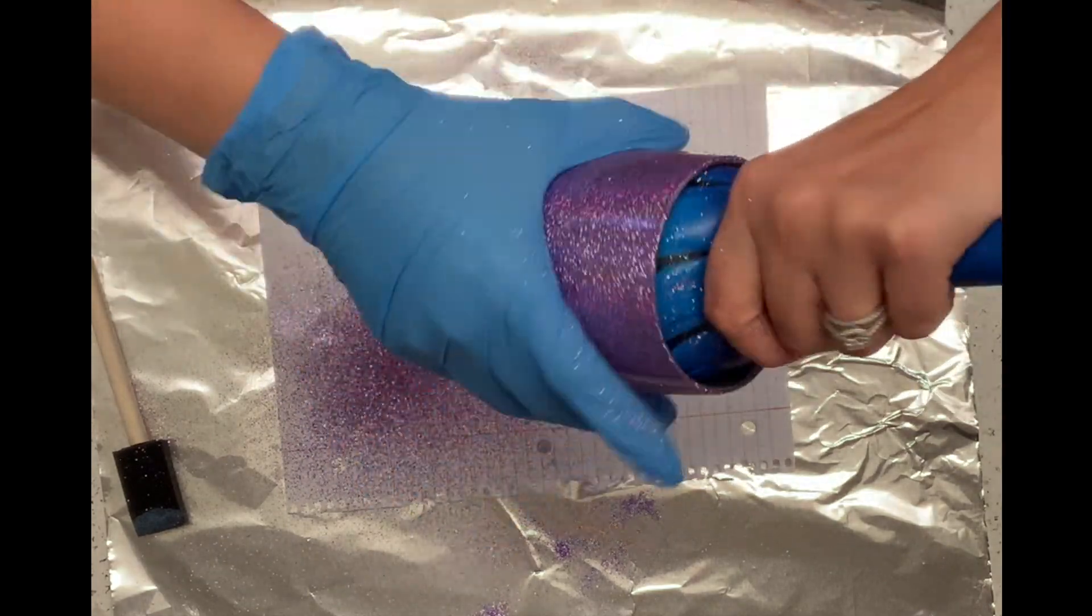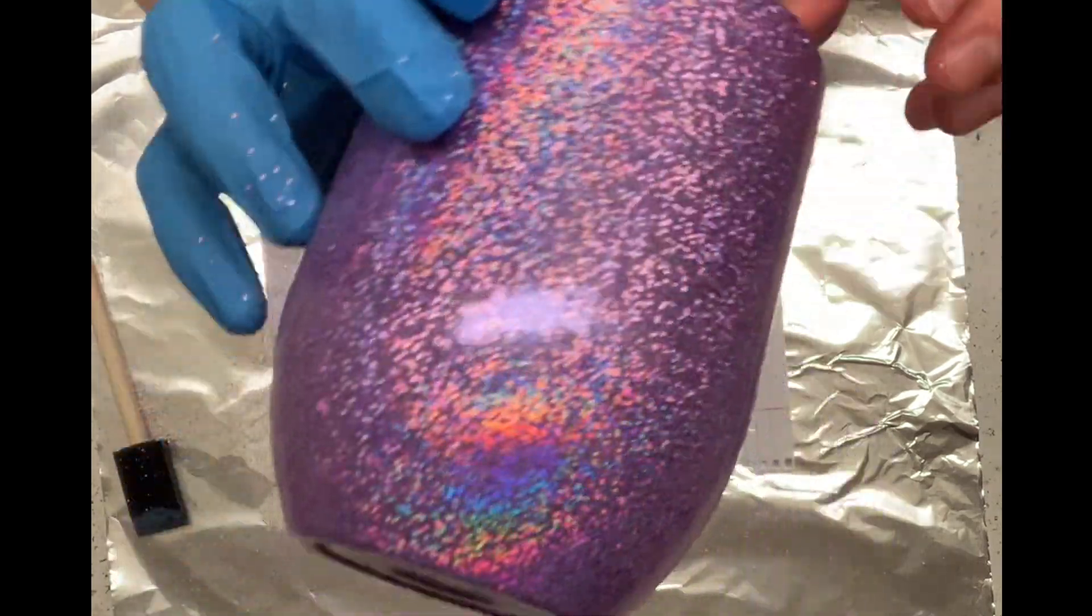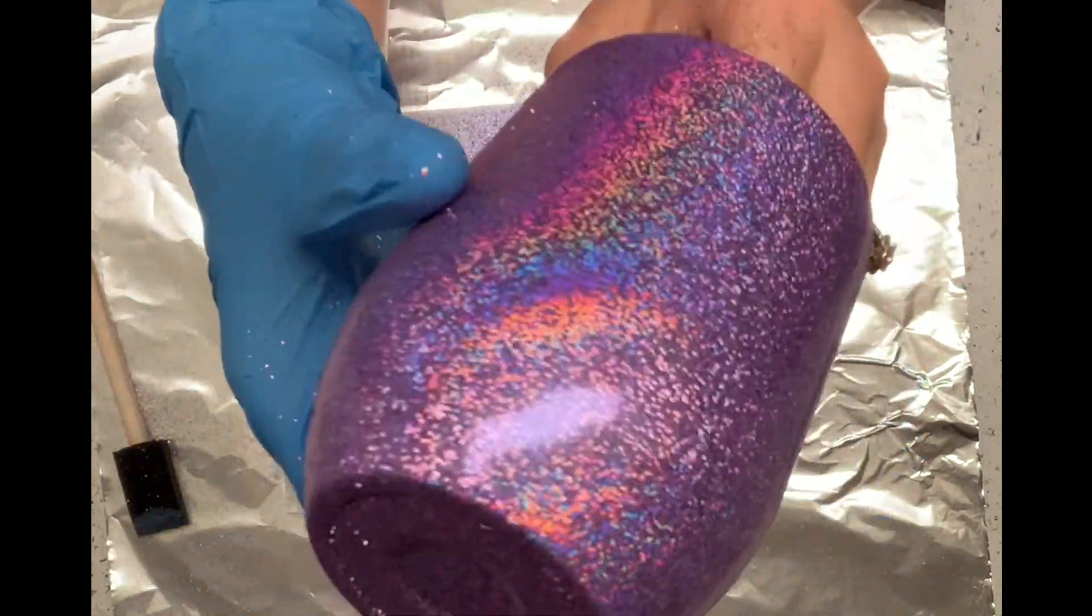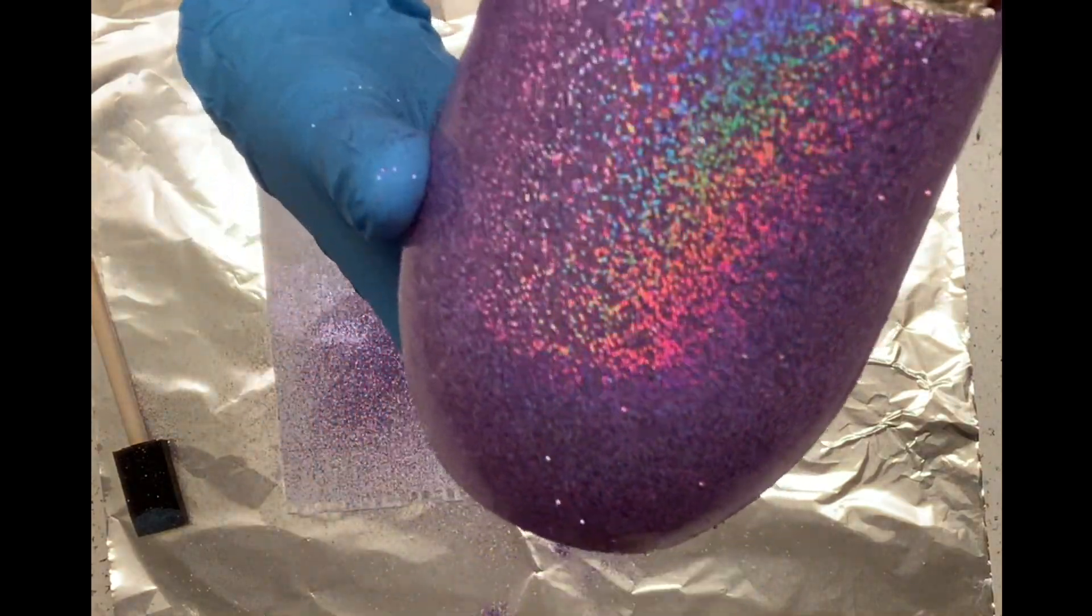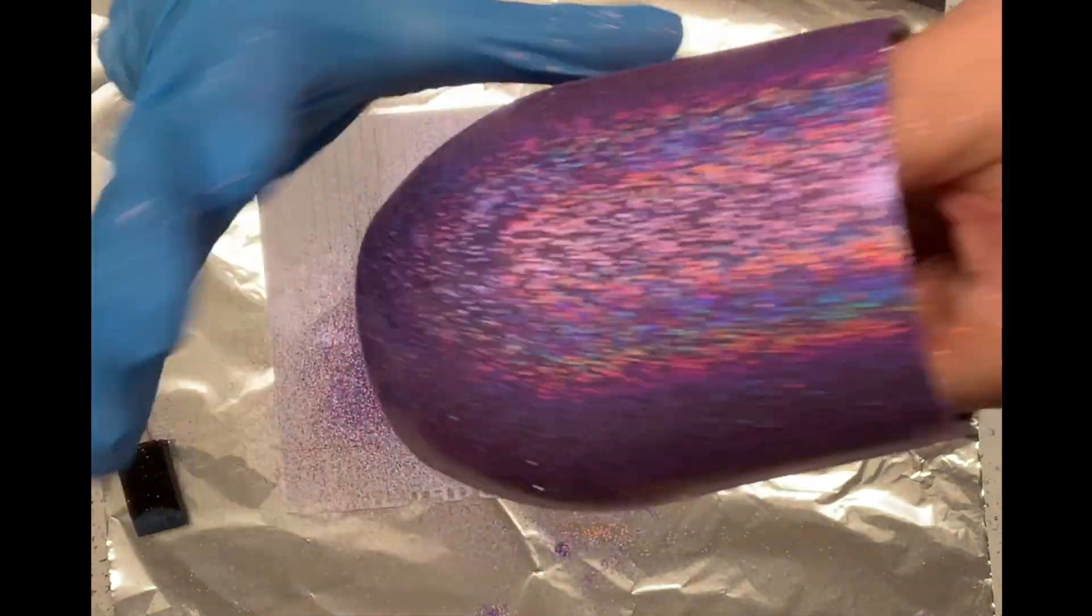Once we've brushed off all the glitter, we have our final product. This is what it looks like. You can see how the glitter is laying nice and flat and we get that really awesome rainbow holographic ring that we were looking for.